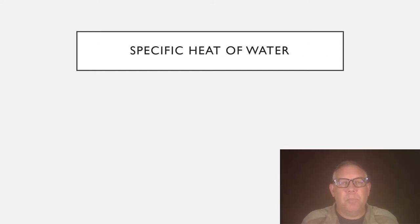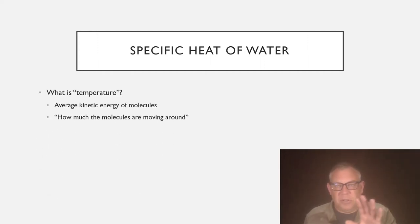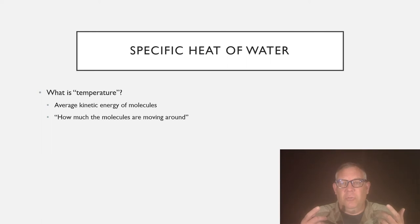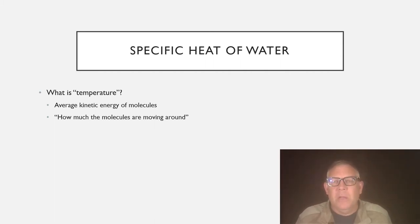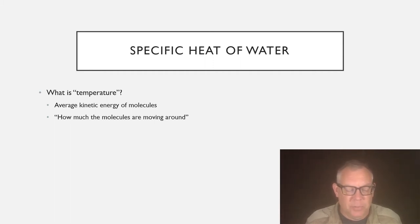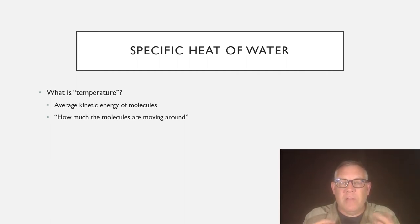Another property of water affected by hydrogen bonds is the specific heat of water. Let's talk about temperature. Temperature is one of those things you just know — you know what hot and cold are — but in physics and chemistry we need to be specific. Temperature is the average kinetic energy of molecules, or how much the molecules are moving around. If something's hotter, its molecules are moving around faster, bouncing off each other harder — they've got more kinetic energy. Kinetic energy is the energy of motion.